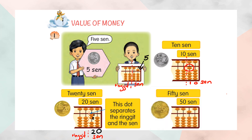For fifty cent — here is zero and this is five, so this is fifty cent.